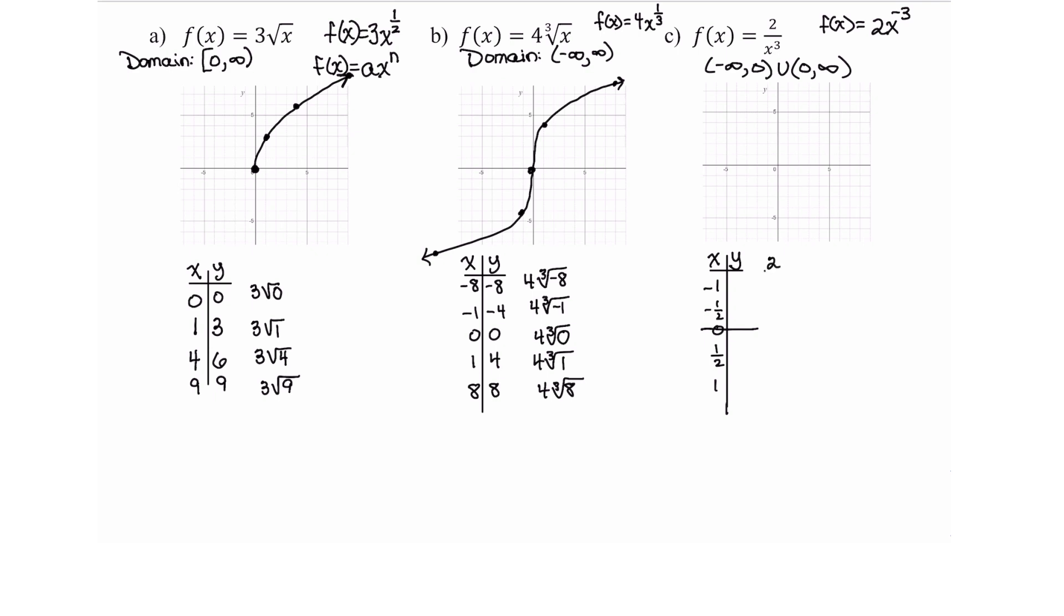Plugging in negative one, I have two divided by negative one cubed. Well, negative one cubed is negative one. Two divided by negative one is negative two. Now be careful on plugging in the negative one half in the denominator. You're going to have two divided by negative one half cubed is negative one over eight. But when you divide by a fraction, you have to keep the numerator the way it is and multiply by the reciprocal of the denominator. So this is actually going to give me two times a negative eight, which is a negative 16. We can't plug zero in. When we put one half in, I have two divided by one half quantity cubed, which is two divided by one eighth, which gives me positive 16. And then when I substitute one in for x, I have two over one cubed. One cubed is one, two divided by one is two.